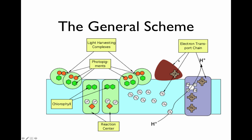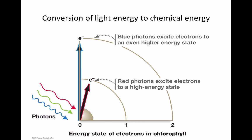This pumps protons across the membrane. Basically what we're talking about is the conversion of light energy to chemical energy. Photons come in, they boost that electron, and then the electron falls through the electron transport chain.